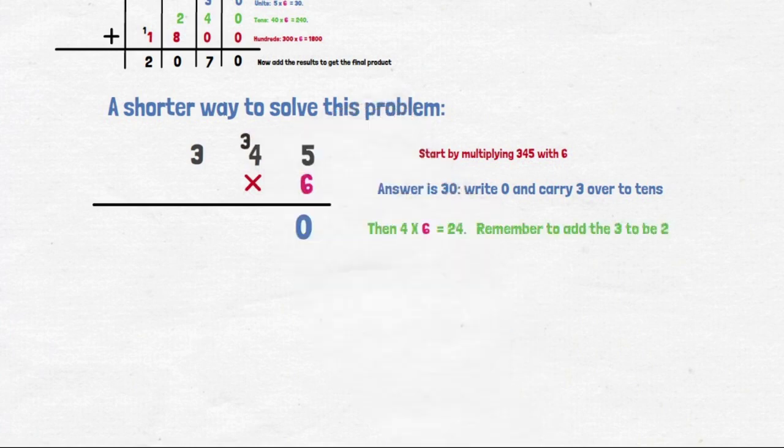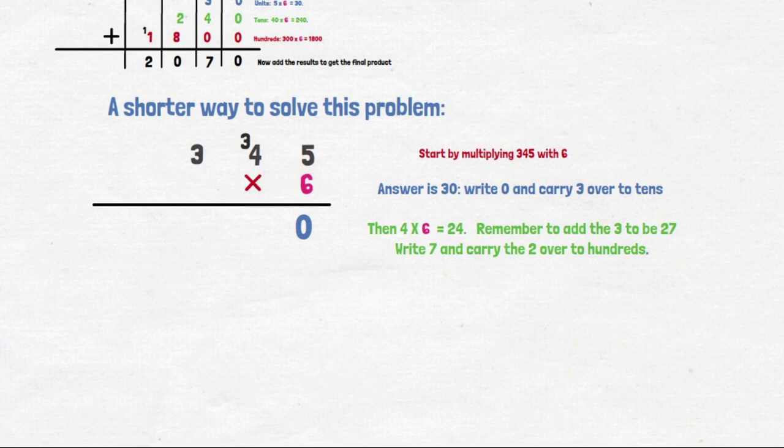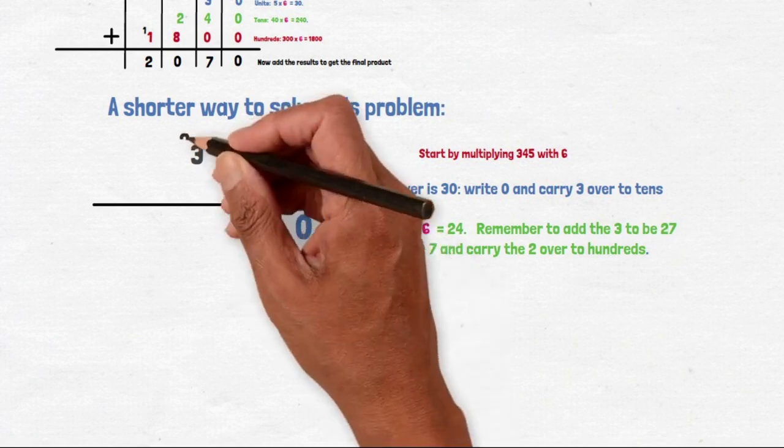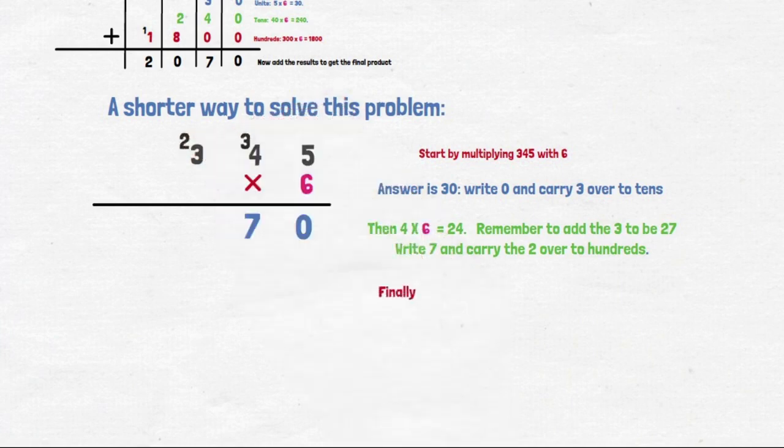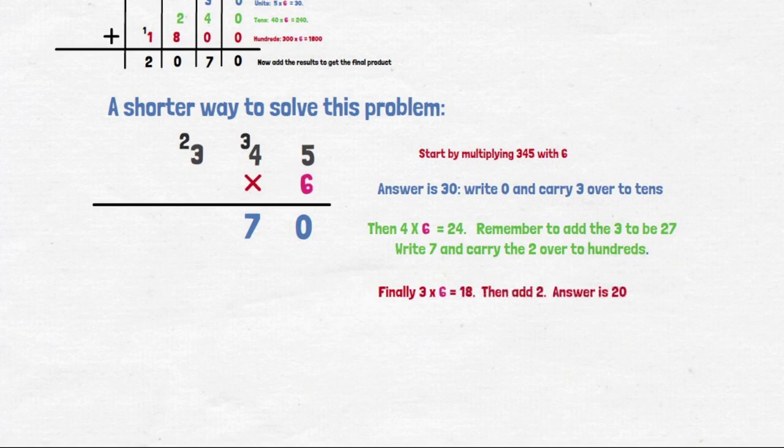4 times 6 is 24. Remember to add the 3 we carried over. And that is 27. We write the 7 down and carry the 2 over.